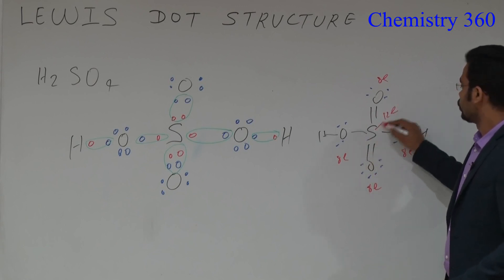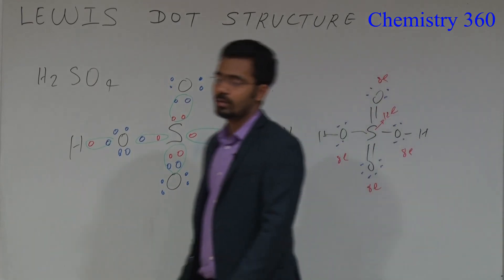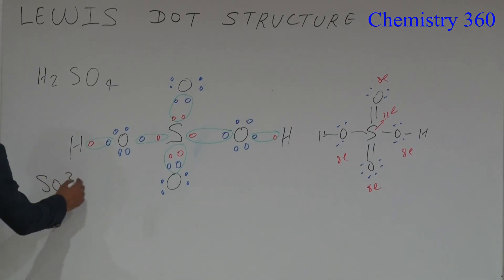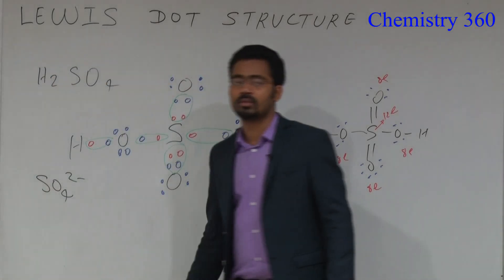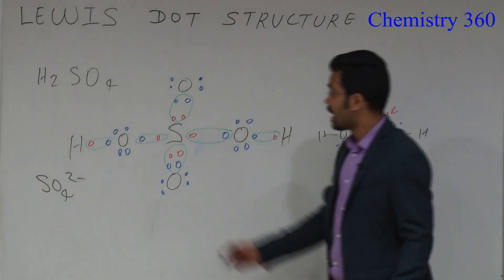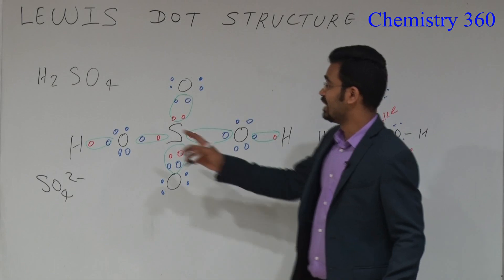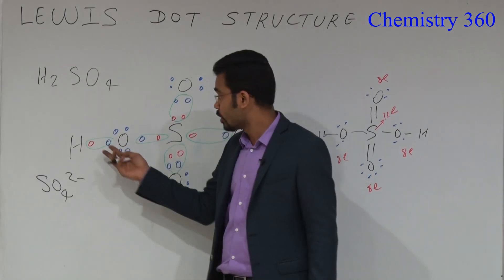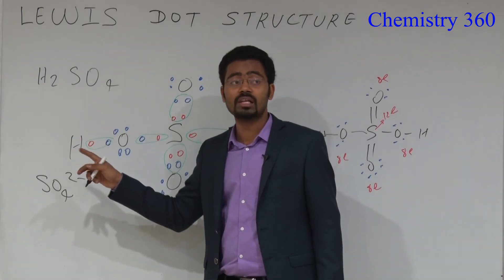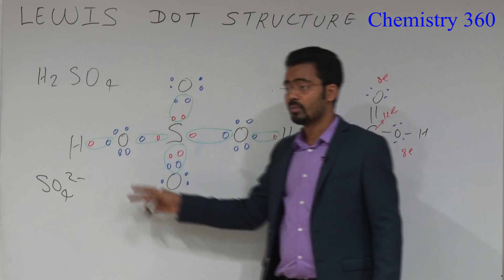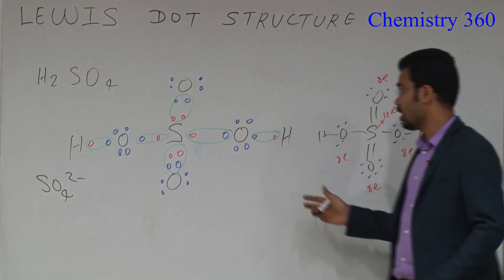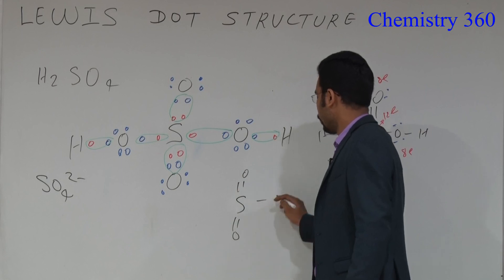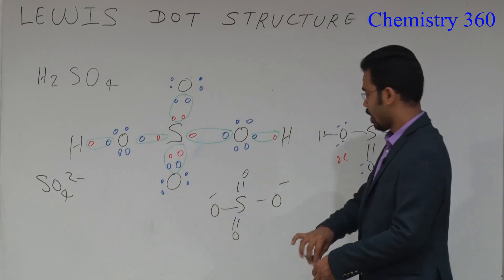Now draw the structure of SO₄²⁻. H₂SO₄ donates 2H⁺, so when hydrogen donates its electron to oxygen, oxygen gains only 1 electron — not 2 — because 1 electron comes from oxygen and 1 from hydrogen. Therefore there will be a negative charge on this oxygen, and also a negative charge on this oxygen. The structure is S double bond O, double bond O, O⁻ and O⁻. Show the lone pairs — it is important.